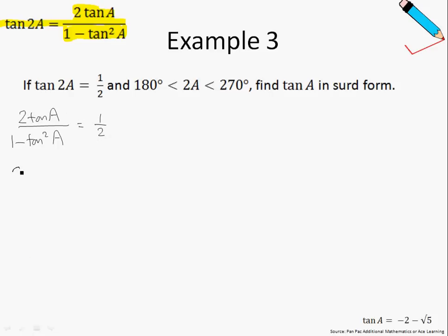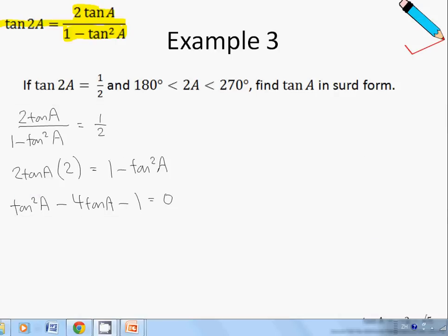The next step, I will cross multiply, so 2 tangent A times 2 equals 1 times 1 minus tangent squared A. Shifting all the terms to the left-hand side of the equation, I'll just get tangent squared A plus 4 tangent A minus 1 equals 0. I made a small error here, this should be plus.